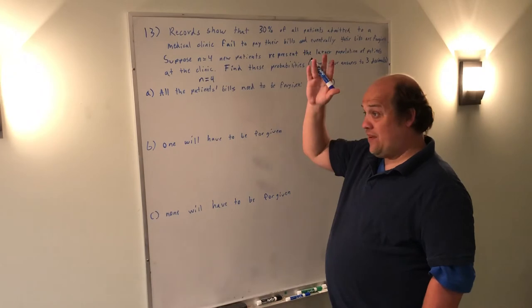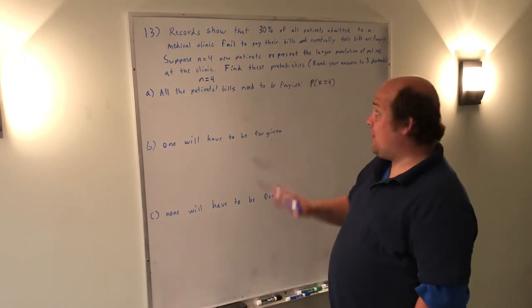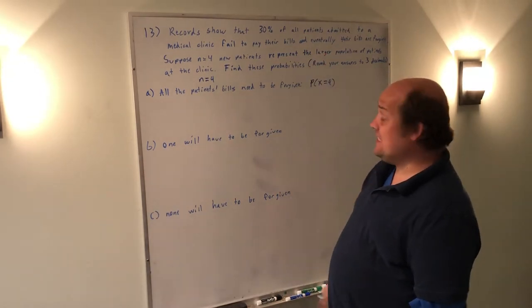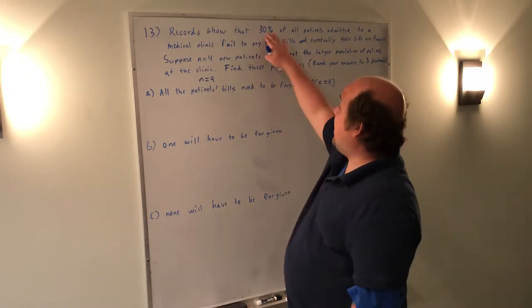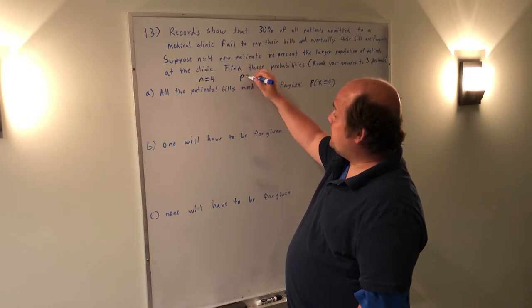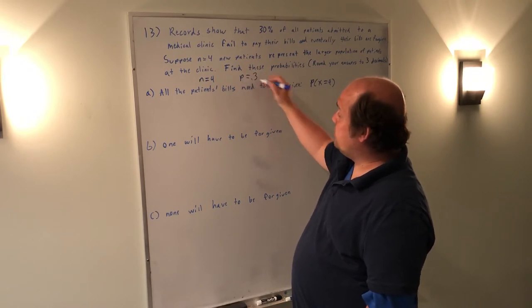The binomial just has to define something as success and something as failure. So it's somewhat counterintuitive, but a success in this instance represents not paying your bill. So if it happens 30% of the time, as a probability, that would be P equals 0.3.